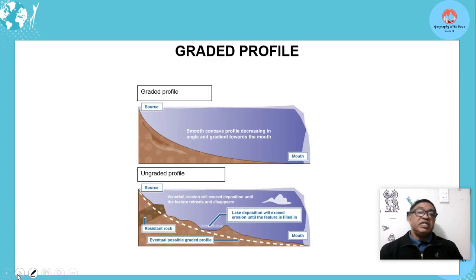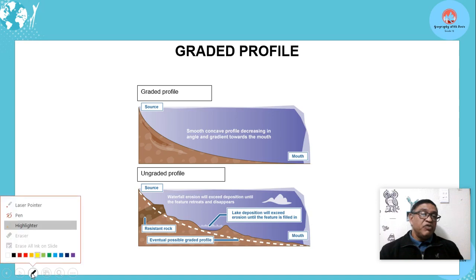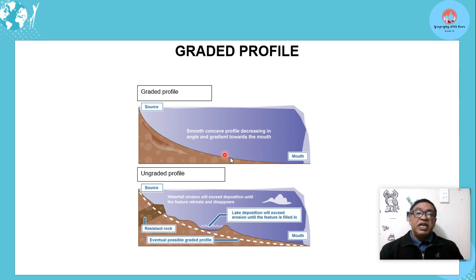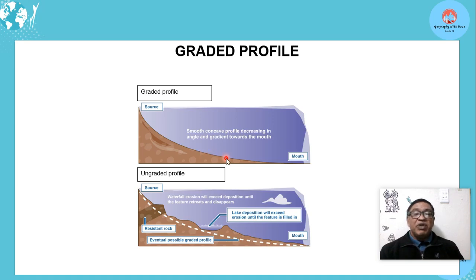Next we're going to look at two concepts: graded and ungraded profiles. If we look at the graded profile, we notice that it is a smooth, concave shape profile — steep at the top and gentle at the bottom. The main word here is 'smooth', meaning it has no obstructions like temporary base levels such as lakes, rapids, or knickpoints. Those are temporary and will be eroded soon, so the graded profile is smooth.